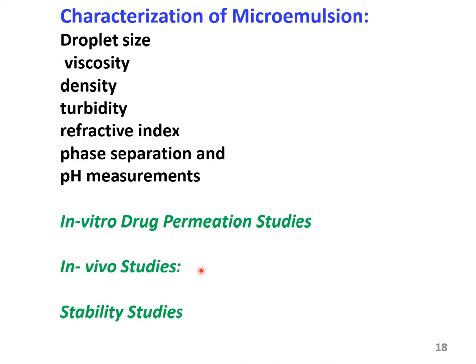Whenever any new formulation is being developed, its efficiency, safety, and toxicity are determined by carrying out in vivo studies that involve bioavailability studies in animals such as rats and also clinical studies. In case the drug is meant for topical application, the in vivo topical studies can be carried out by applying the formulation onto the skin of the animal and determining the amount of drug that has penetrated into the systemic circulation. Pharmacological studies for studying the efficacy of the drug also need to be carried out, and skin irritation potential of the formulation should be determined if it is meant for topical use.